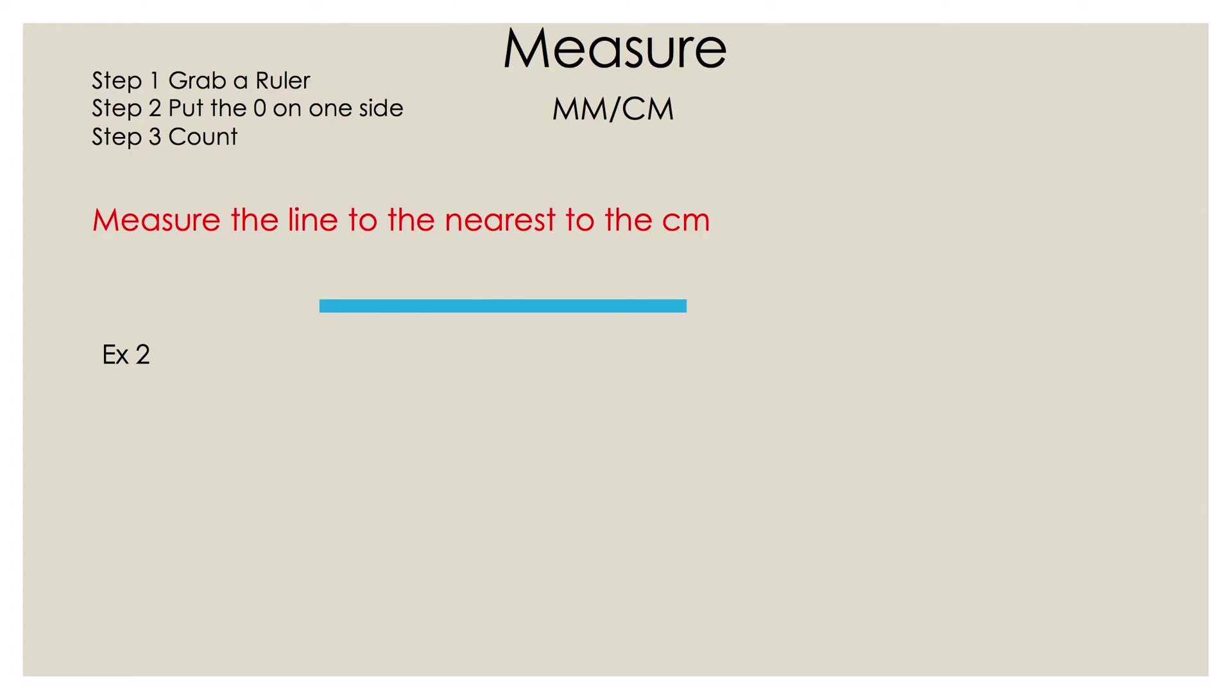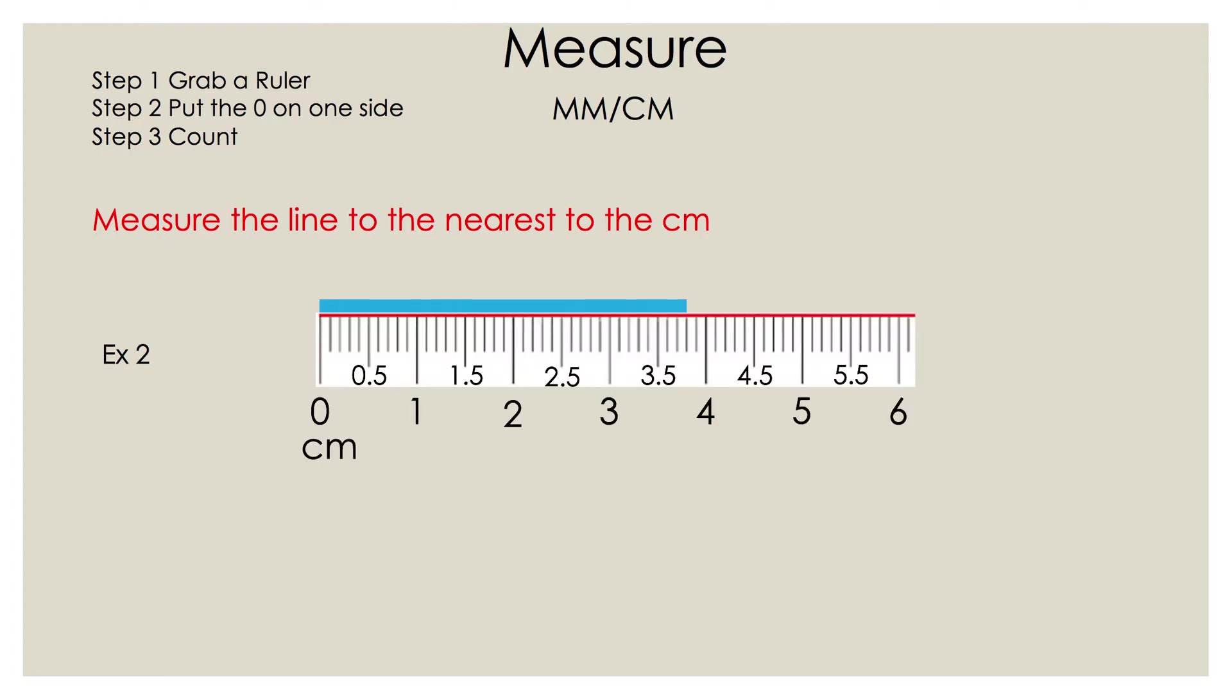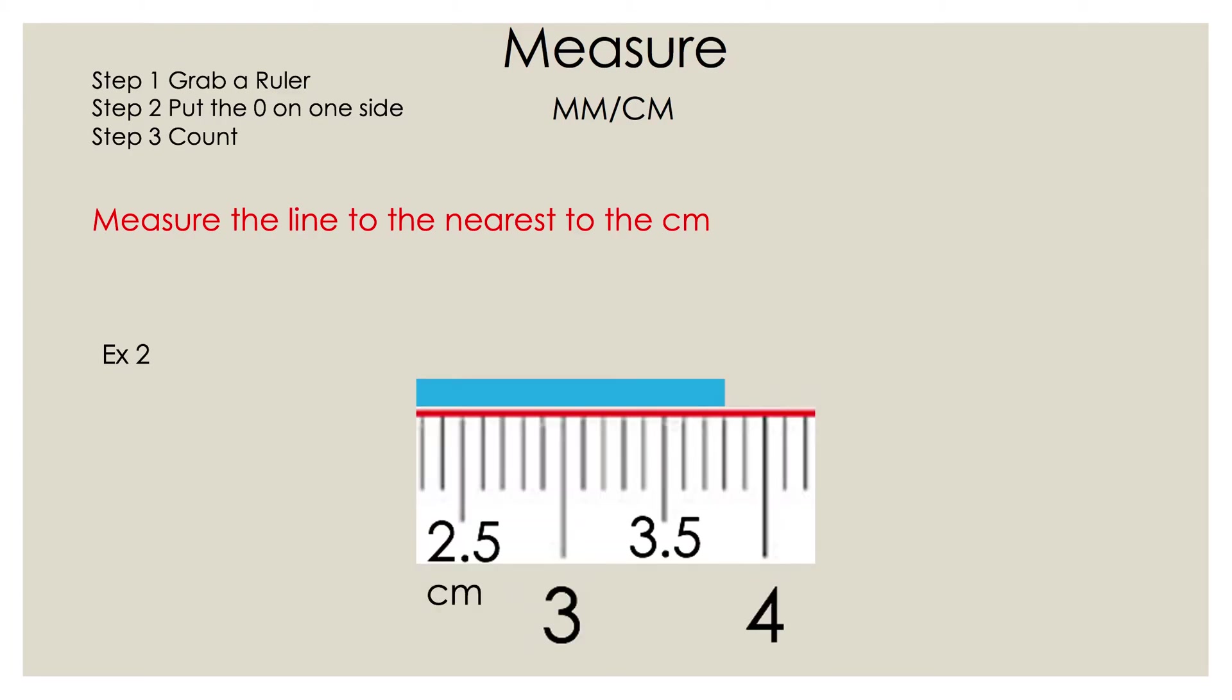Now let's take a look at example two of four. So let's go ahead and grab the ruler, place the zero on one side. Now we're going to go ahead and blow up the image so you can see it easier.